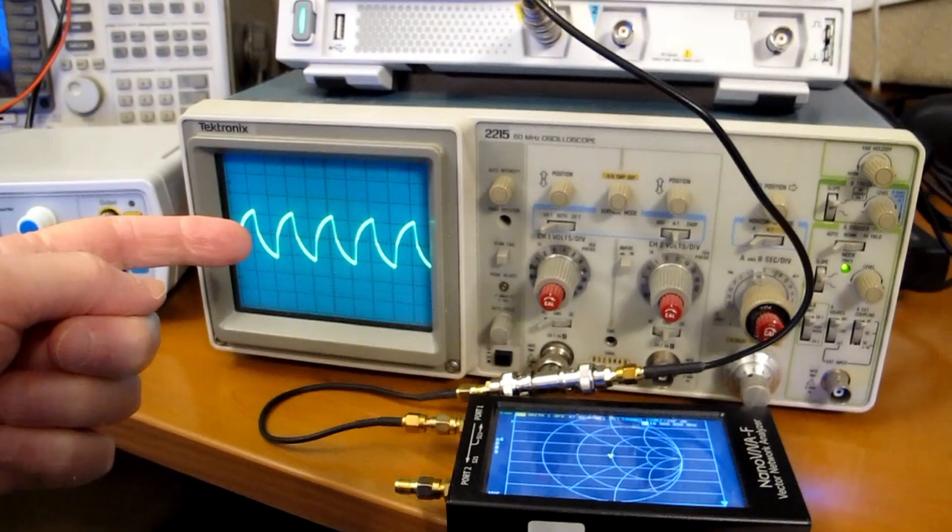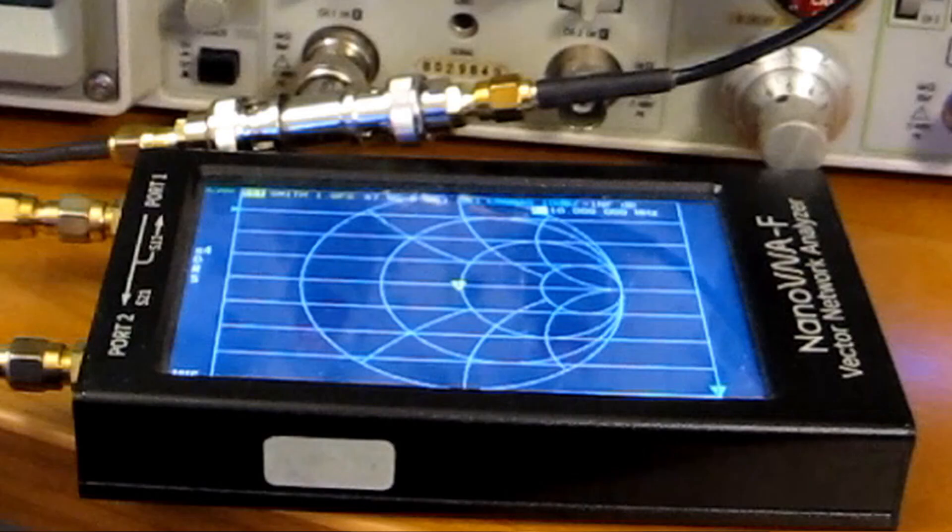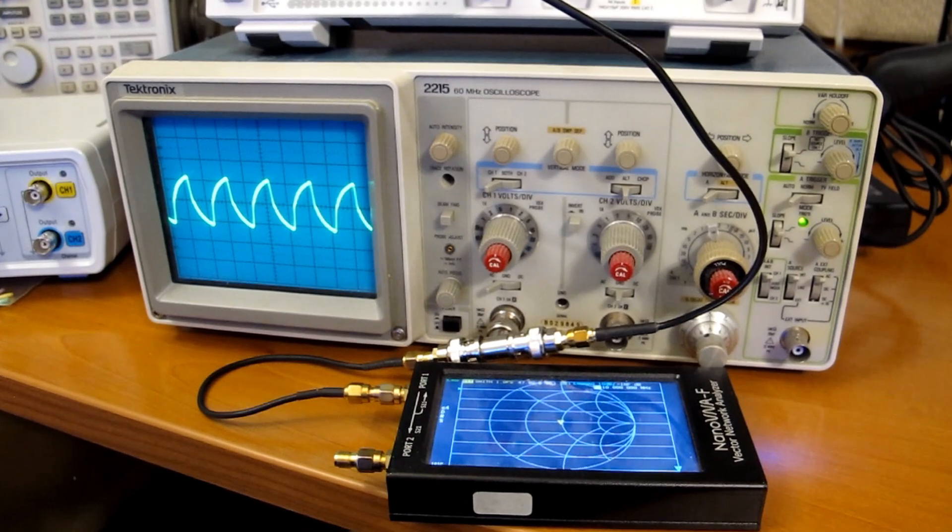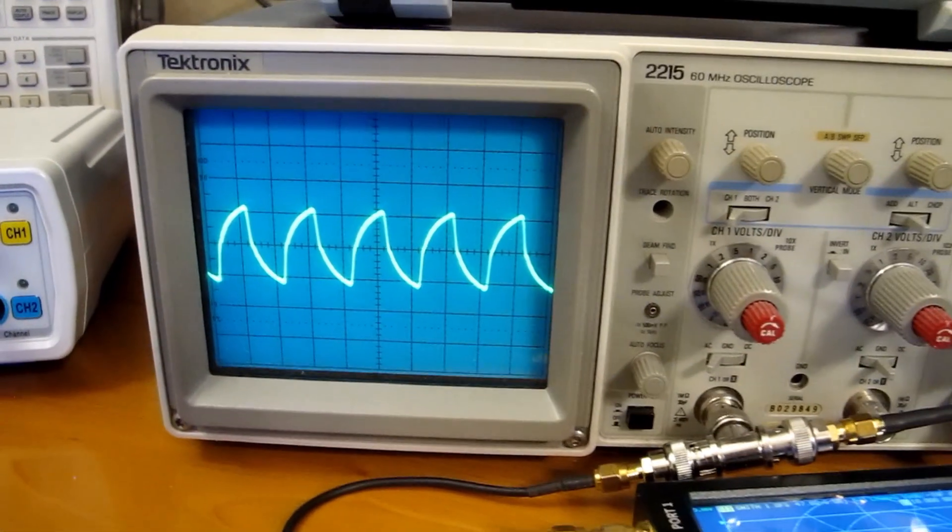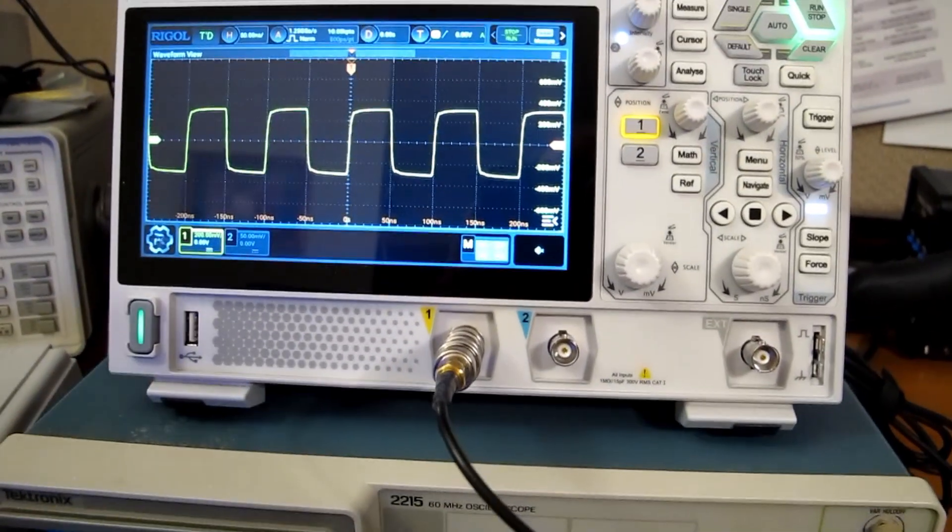Here's my old scope, a Tektronix 2215 60 megahertz. The Nano VNA is putting out a 10 megahertz square wave, well kind of a square wave. The new one is right up here running off exactly the same signal.